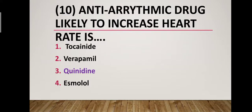Question number ten: Which antiarrhythmic drug is likely to increase heart rate? Option one: tocainide. Option two: verapamil. Option three: quinidine. Option four: esmolol. Correct answer is option three — quinidine. Quinidine is the antiarrhythmic drug likely to increase heart rate.